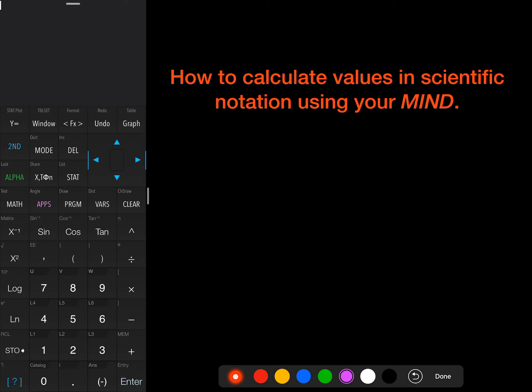So how do we calculate values in scientific notation using your mind? Because sometimes we can't use a calculator or we don't have a calculator. So the why is, well, it's a good idea to be able to estimate that, to have some good number sense. Because sometimes we need to double check to make sure that we're entering our values into our calculator properly.